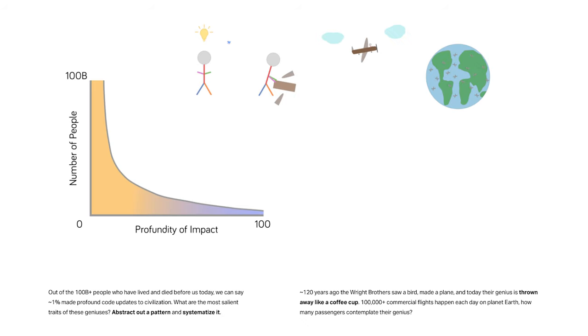Out of the 100 plus billion people who have lived and died before us today, we can say approximately 1% made profound code updates to civilization. What are the most salient traits of these geniuses? Abstract out a pattern and systematize it.